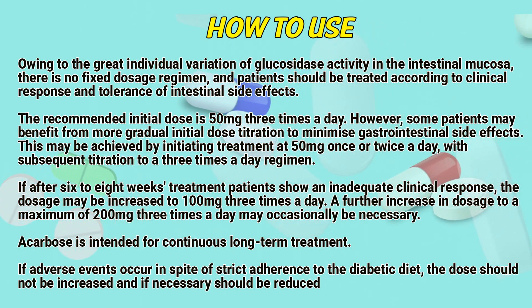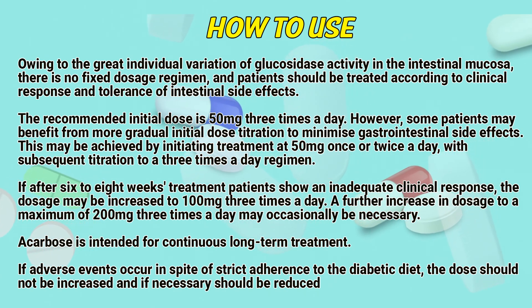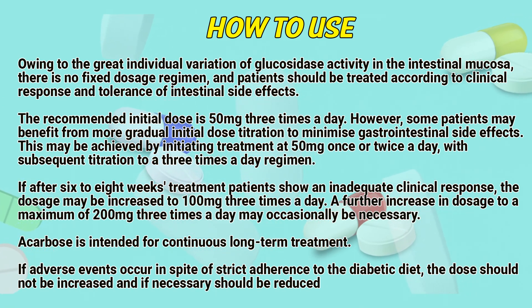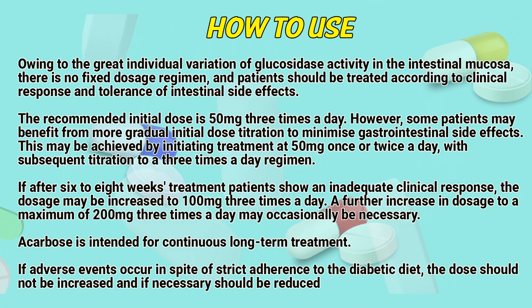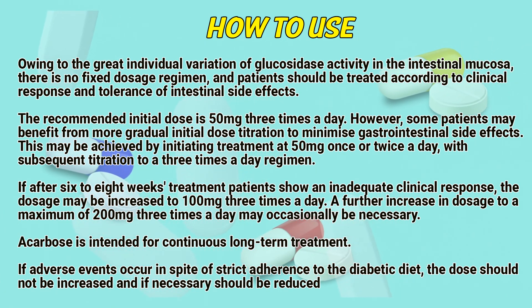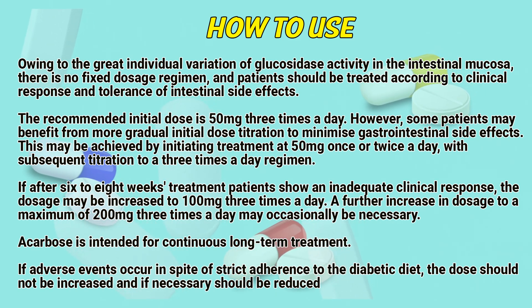The recommended initial dose is 50 mg 3 times a day. However, some patients may benefit from more gradual initial dose titration to minimize gastrointestinal side effects. This may be achieved by initiating treatment at 50 mg once or twice a day, with subsequent titration to a 3 times a day regimen.